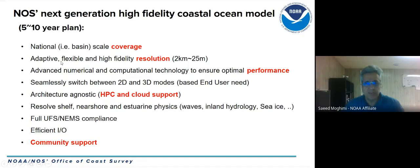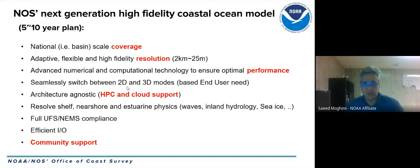To support this we need advanced numerical and computational technology for optimal performance. We also see benefit in seamlessly switching between 2D and 3D models — possibly on the same mesh — because for total water level, compound inland-coastal coupling, or flooding, 2D models are often sufficient, but for navigation, biogeochemistry, or pollution transport, 3D models are necessary.